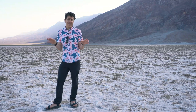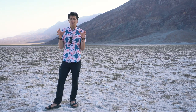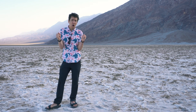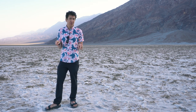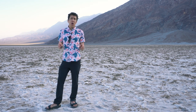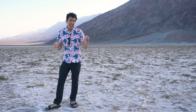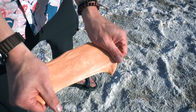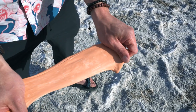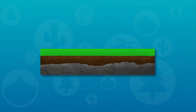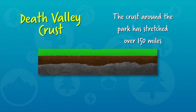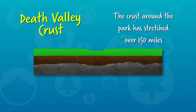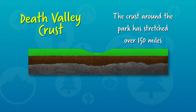Around 16 million years ago, a large part of the North American tectonic plate started to stretch apart due to convection currents in the mantle. All that stretching made the crust in places like Death Valley really, really thin. It's kind of like if you were to stretch some silly putty — as you pull the ends, the middle starts to get thinner. Over the last few million years, the crust in Death Valley has stretched out about 150 miles.